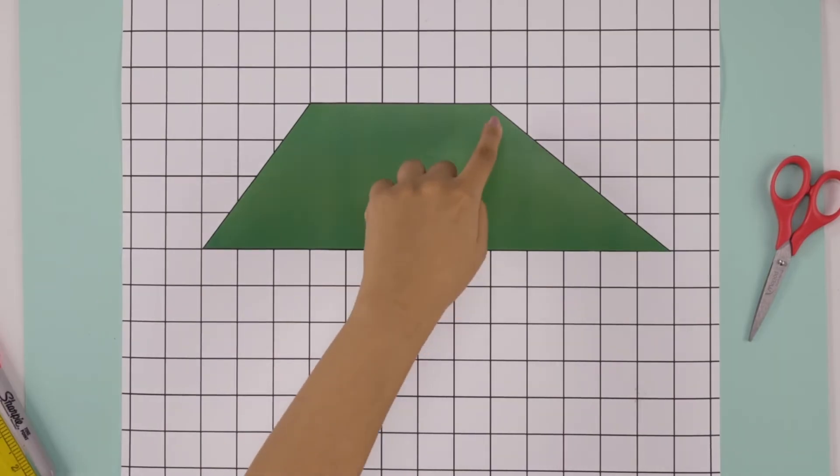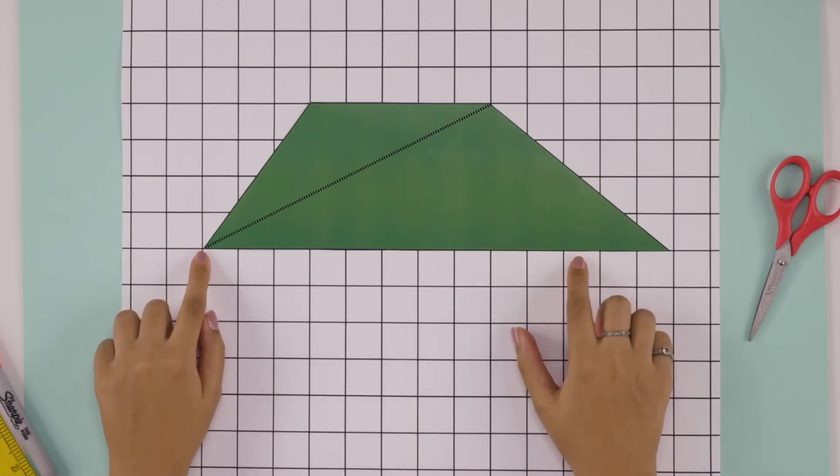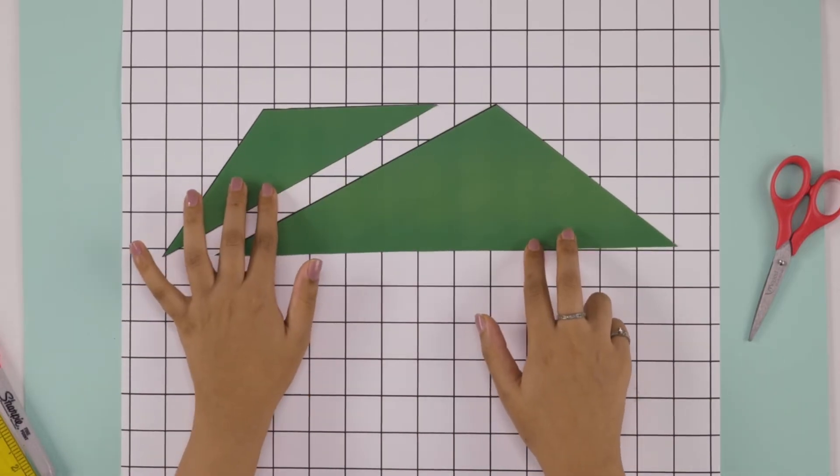There is another way of finding the area of a trapezium. Simply draw any one of its diagonals. This gives us two triangles with the same height.